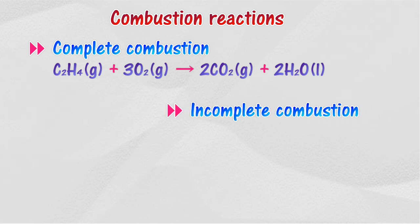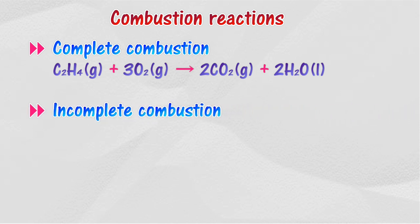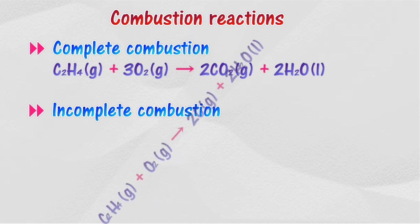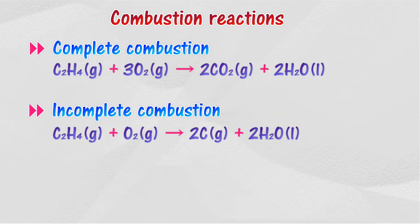In a condition of inadequate oxygen, the combustion of alkenes is incomplete. Like alkanes, alkenes combust in a condition of inadequate oxygen to produce carbon dioxide, carbon monoxide, water, and soot.